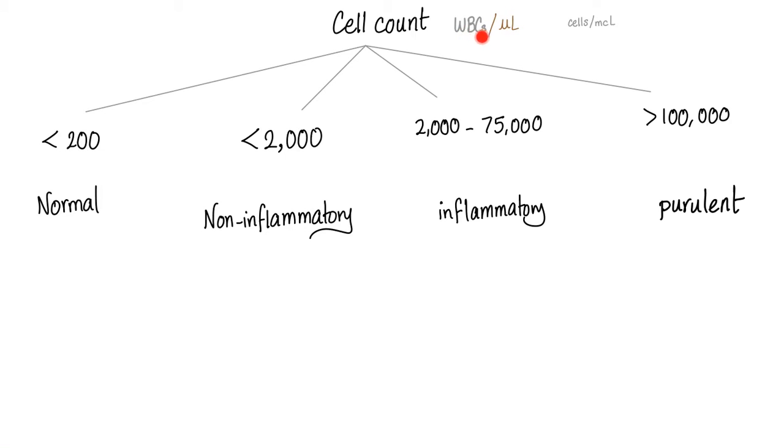When we count the white blood cells per microliter, also known as cubic millimeter, also known as MCL, same stuff. Normally, less than 200. Non-inflammatory, less than 2,000. So osteoarthritis is here. Inflammatory, 2,000 to 75,000. So rheumatoid arthritis is here. Purulent is more than 100,000. Septic arthritis is here.